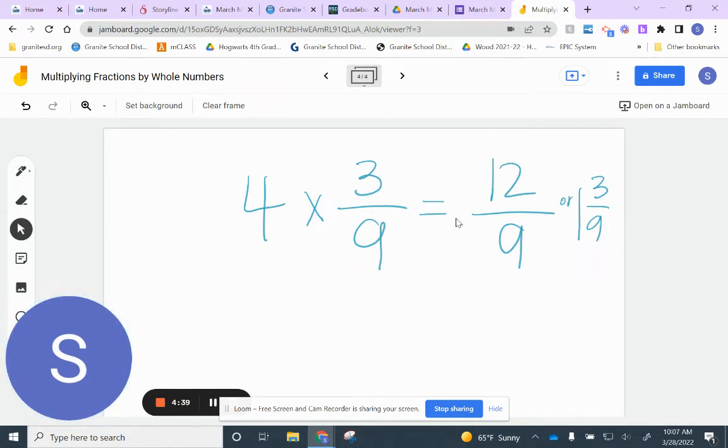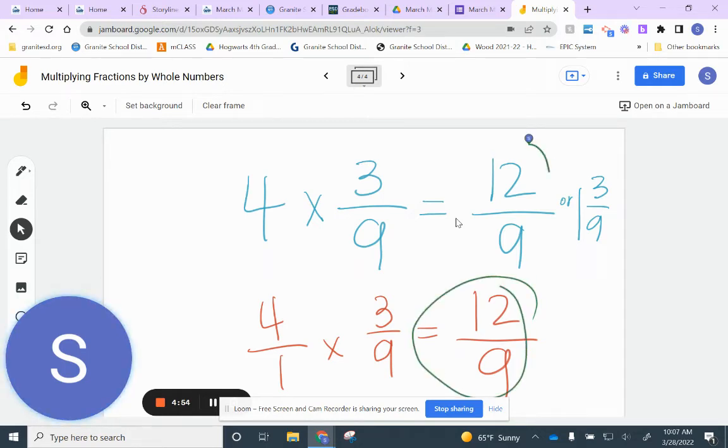Or you could have solved it like four over one times three ninths equals twelve ninths. Remember, either way of solving is correct, as long as you ended up with one of these answers. Okay, moving on to the next one.